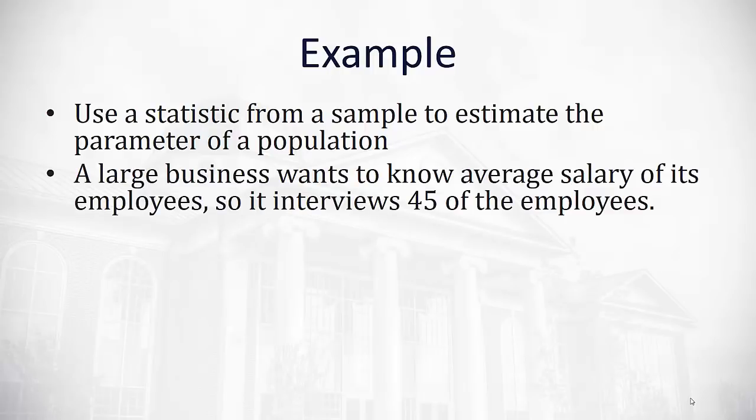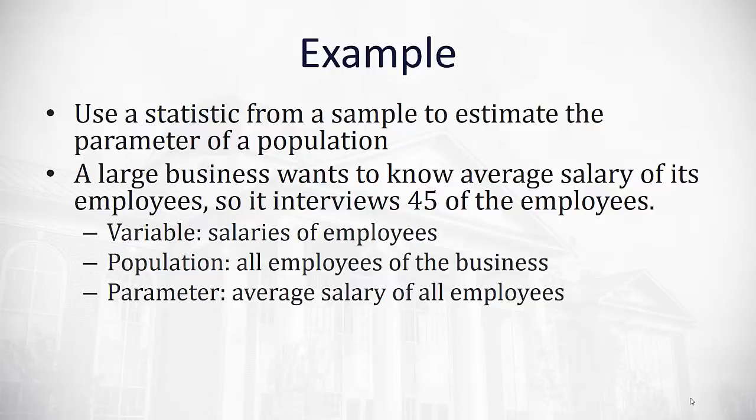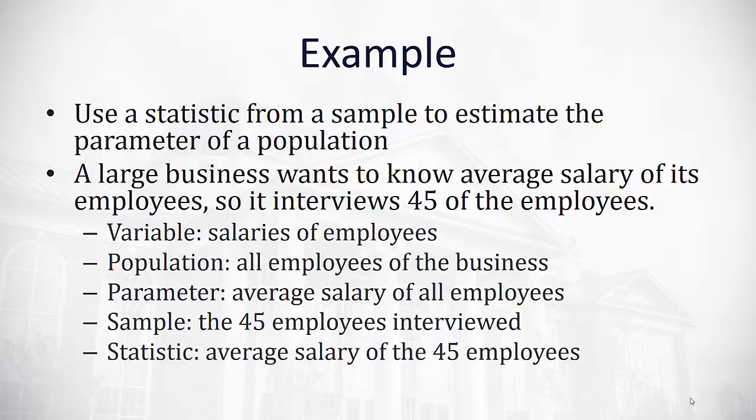So for example, if a business wants to know possibly the average salary of all of its employees, and it goes out and interviews 45 of those employees to learn this information. The variable, the thing of interest about the individuals, is the salaries of those individual employees. The population is everybody of interest, all the employees of the business. The parameter is going to describe that population, so it's the average salary of all of the employees. Notice how those two are different than the sample and the statistic. The sample is just the 45 employees interviewed, some of the individuals of interest. And the statistic describes just the sample. It's the average salary of just those 45 employees. And this is how we can use our vocabulary to set up a study of interest.